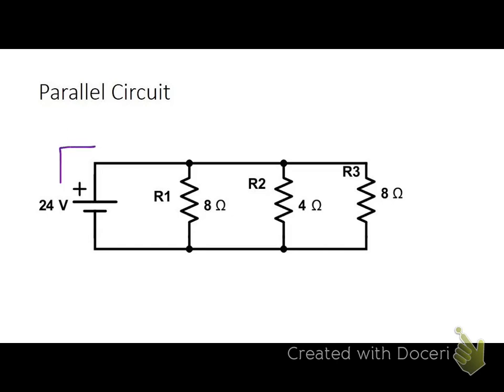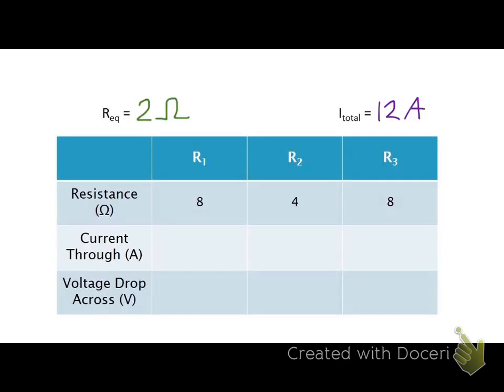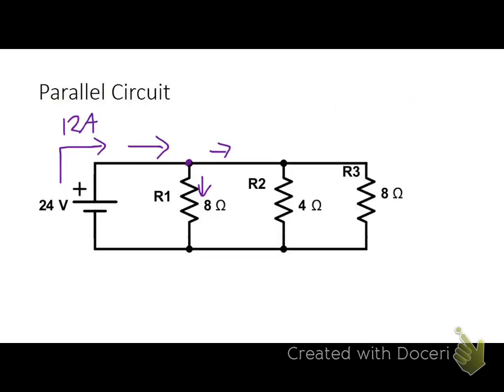So I've got 12 amps of current coming out here, and uh-oh, I arrive at a junction. So some of my current is going to go this way, some of my current is going to go this way, and I don't know how much is going one way or the other yet. So I can't just hop back over and fill in my current values with 12 because that current has split before it's gotten to any resistor.